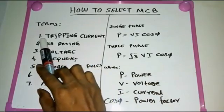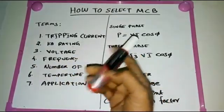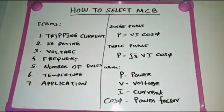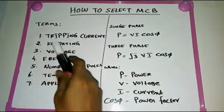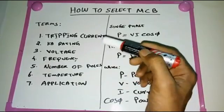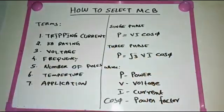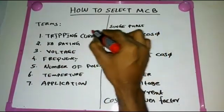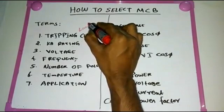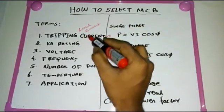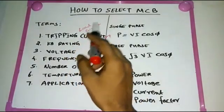The first term is tripping current. Tripping current means: when more than that current passes through the MCB, it will trip the circuit and isolate the faulty section from the healthy section. The tripping current we choose must be more than the load current. For example, if we have a load current of 8 ampere, we need to select a 10 ampere tripping current MCB.